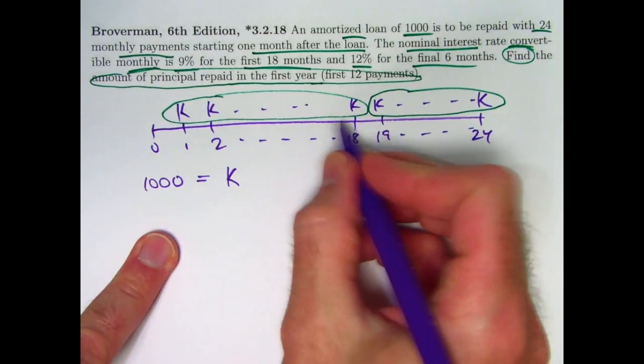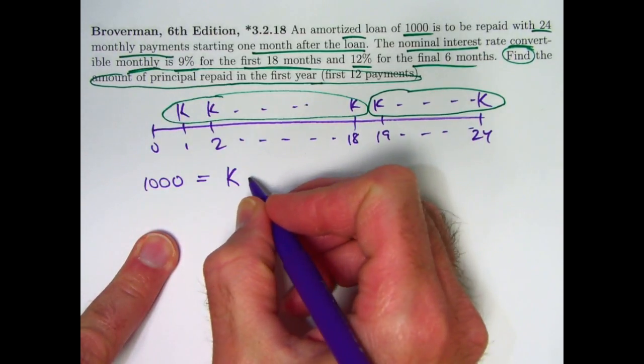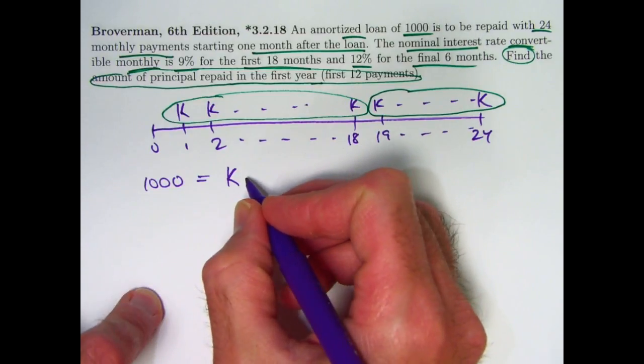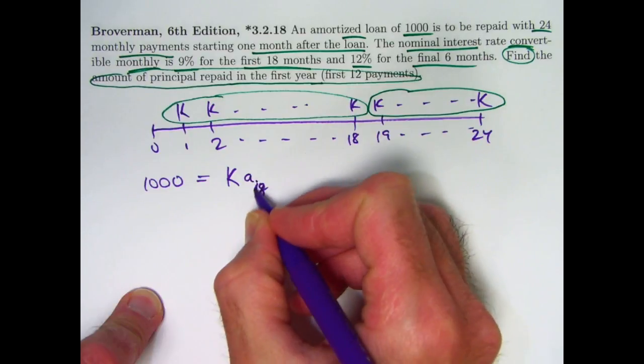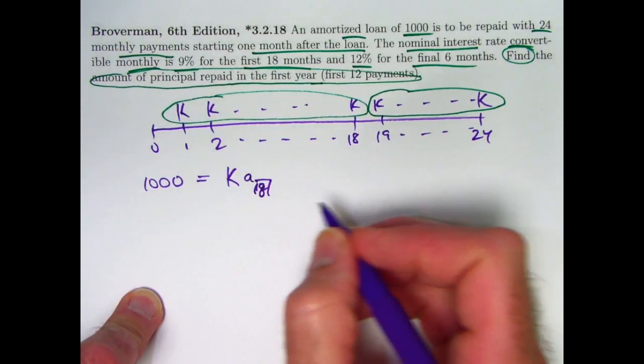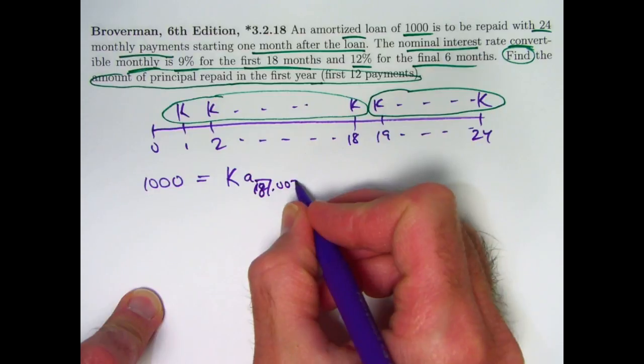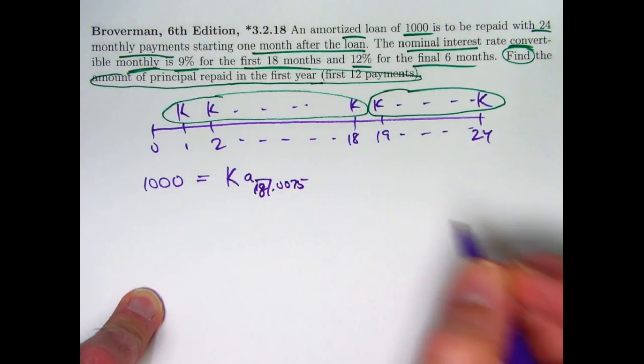So with the first group of 18 payments, the present value is going to be K times a-angle-18 at 0.0075. 0.09 divided by 12 will be 0.0075. There's your monthly interest rate.